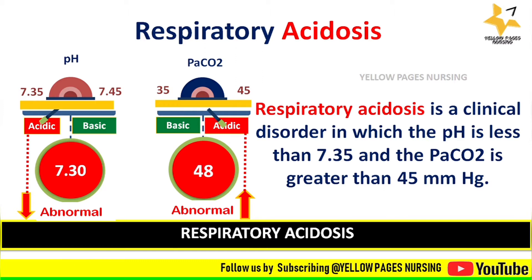If we look at the PaCO2 level, it is 48, which is more than the normal level. The normal level of PaCO2 lies between 35 and 45 mmHg. When we compare both values — pH acidic and PaCO2 acidic — we can conclude that it is respiratory acidosis.